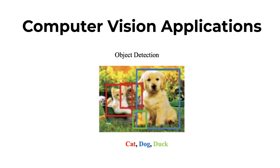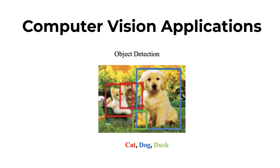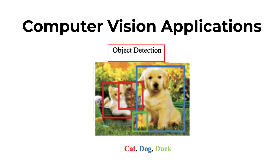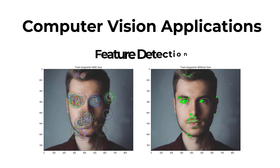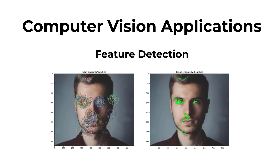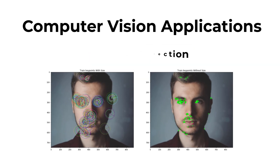To identify and locate objects within an image or video, you can leverage object detection. To find patterns and shapes like edges or corners, you can utilize feature detection.